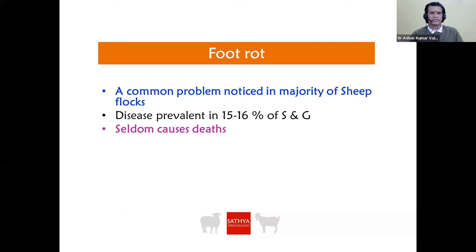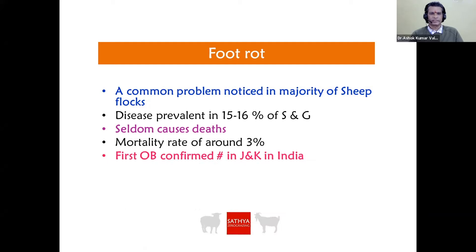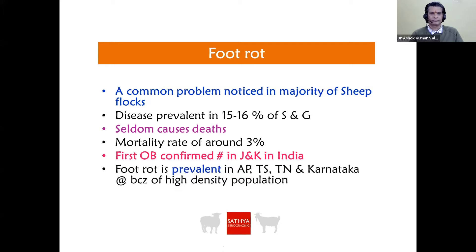Foot rot seldom causes deaths. Whatever deaths we notice in foot rot are due to hypoglycemia only, not because of the disease itself. The mortality rate is around 3%. The first outbreak was confirmed in Jammu and Kashmir in India. Foot rot is most prevalent in Andhra Pradesh, Telangana, Tamil Nadu, and Karnataka, possibly because of the high density of sheep and goat population in these states.